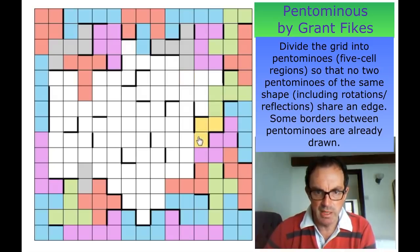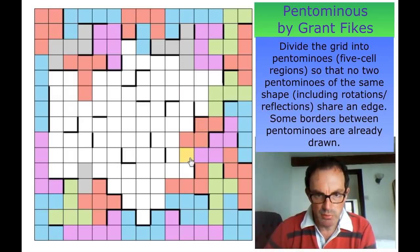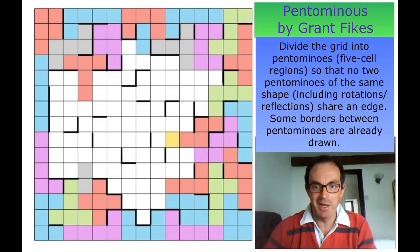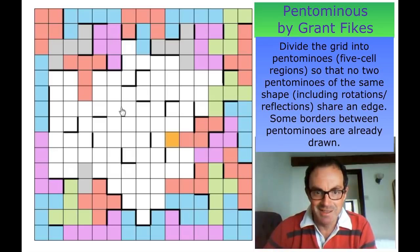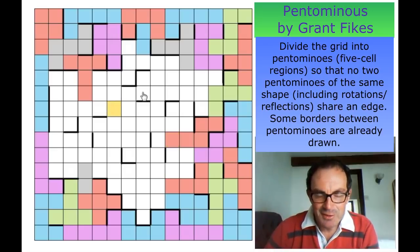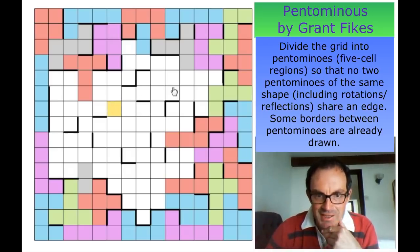This square now must take those positions — can't be a W, can't take that square — so that becomes an N pentomino. My goodness, imagine constructing this.